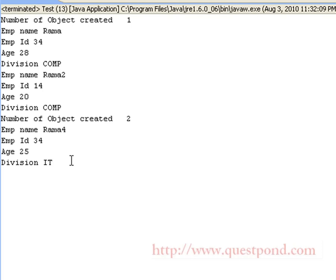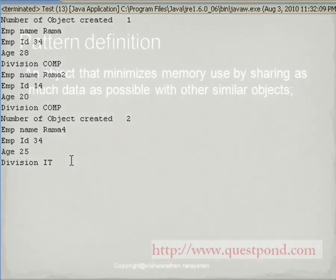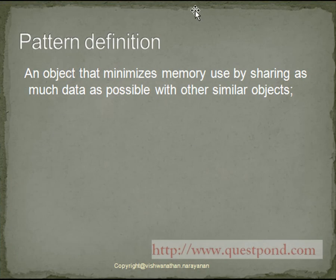Thus we have ensured good performance and reduction in memory consumption by using the flyweight design pattern. The flyweight design pattern can be defined as follows: it is an object that minimizes the memory used by sharing as much data as possible with other similar objects. In our example, we shared the initial part of the iCard — that is, data pertaining to a particular division — across various employees, and thus saved memory and improved performance.